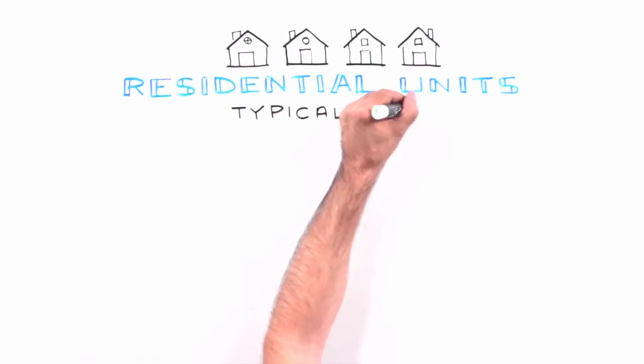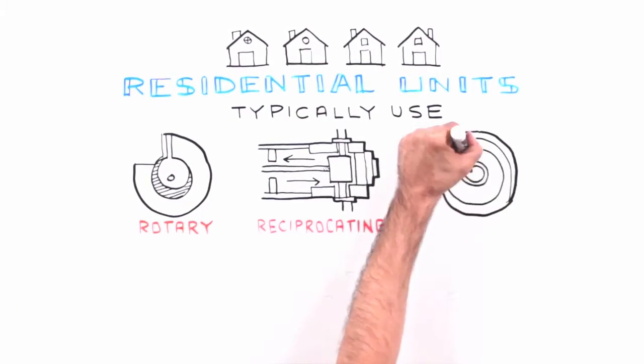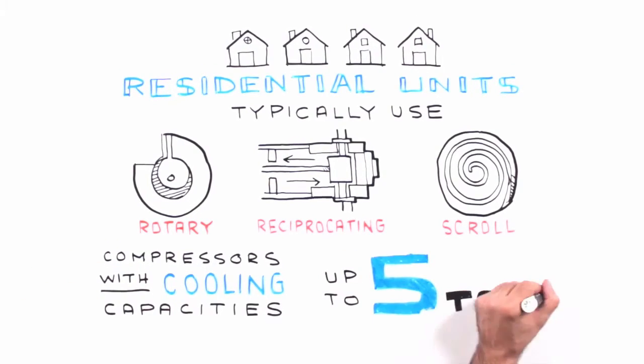Residential units typically use rotary, reciprocating or scroll compressors with cooling capacities up to 5 tons.